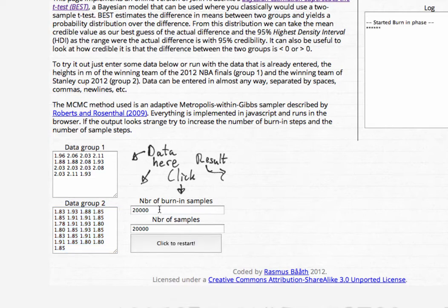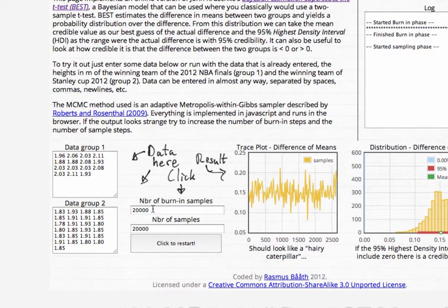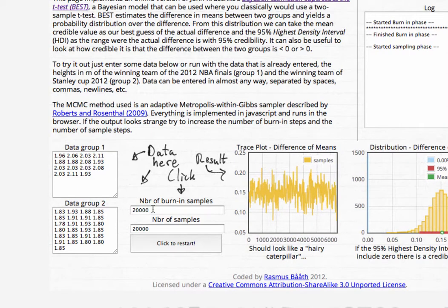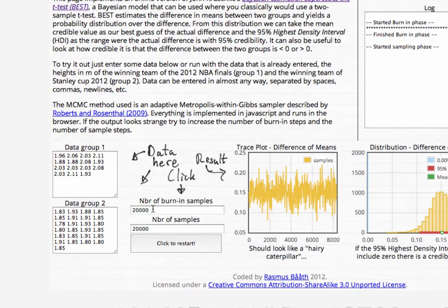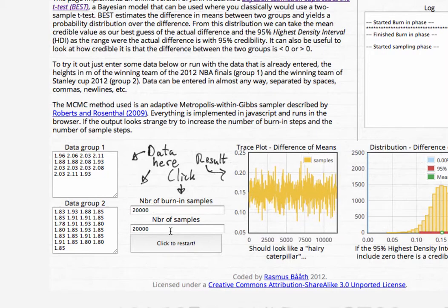If we click to start, notice that in these boxes we have burn-in samples and number of samples. The burn-in samples are simply samples that we discard from our Markov chain Monte Carlo simulation, or MCMC chain, which are discarded because the chain essentially starts out in a random arbitrary location, which may not be a very good location when we're trying to estimate our target distribution.